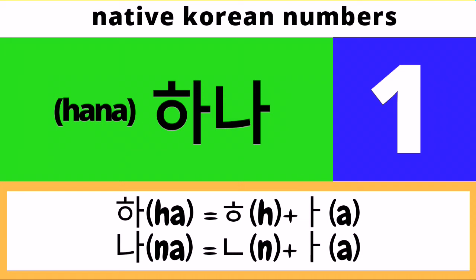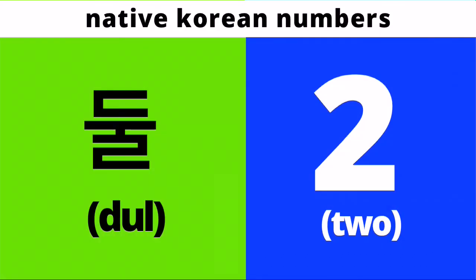Number 2 is Tul. This is just composed of one syllable, which is Tul. Pronounce it with me: Tul.